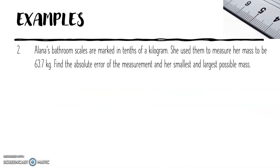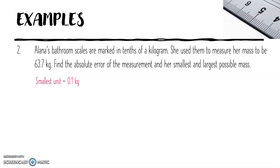Another example: Alana's bathroom scales are marked in tenths of a kilogram, so she used them to measure her mass to be 73.7 kilograms. We want to find the absolute error of the measurement and her smallest and largest possible mass. The smallest unit here is 0.1 kilograms, so the absolute error is 0.5 times 0.1 kilograms, which equals plus or minus 0.05 kilograms.